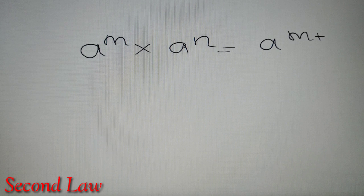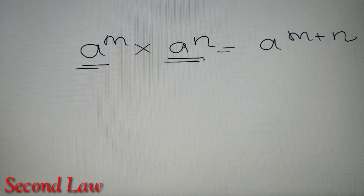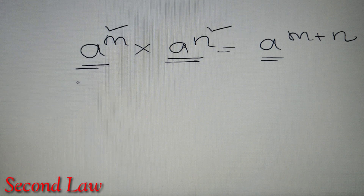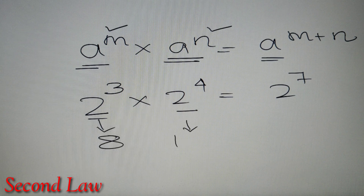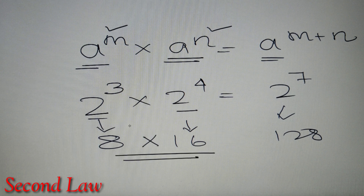The second property says that if we have A raised to power M multiplied by A raised to power N, then this equals A raised to power M plus N. This is similar to the first property, but here the bases of both numbers are the same. For example, 2 to the power 3 multiplied by 2 to the power 4 gives 2 to the power 7. Verifying: 8 times 16 equals 128, and 2 to the power 7 is also 128. So this property is verified.